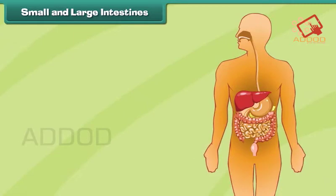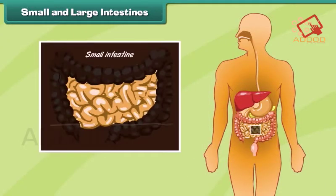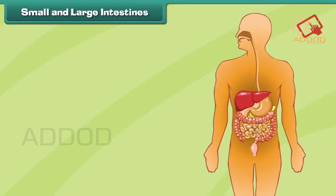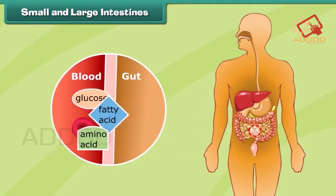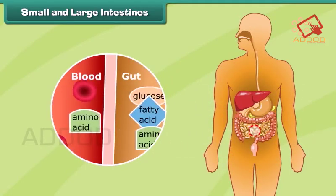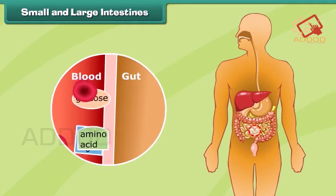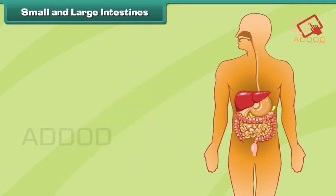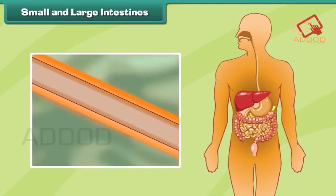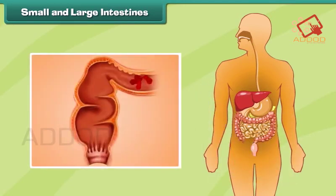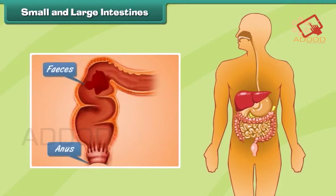Small and large intestines: the intestines are long tubes where the final breakdown and absorption of food occurs. The small intestine is a long coiled tube where the digested food is broken down completely and absorbed into the blood. The large intestine absorbs water from the undigested food and passes the waste food out from the body as feces.